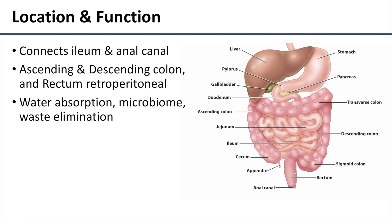The large intestine is going to connect the small intestine, specifically the ileum of the small intestine, with the anal canal. It has ascending and descending parts as well as a rectum which are retroperitoneal, meaning they are behind the peritoneum, and it's going to sit in the right and left lower quadrants of the abdominal pelvic cavity.